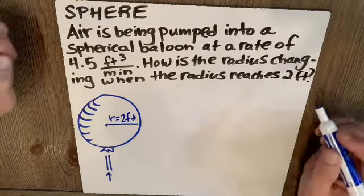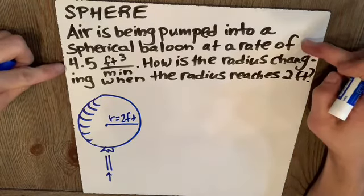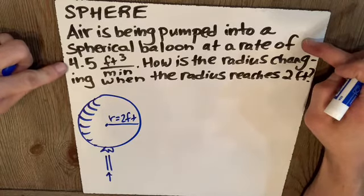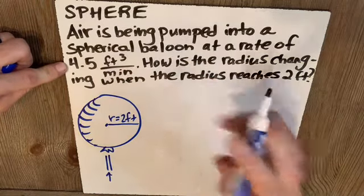So what have they given us? The rate of air being pumped into the balloon is 4.5 feet cubed per minute. So that's a rate. That's a derivative.